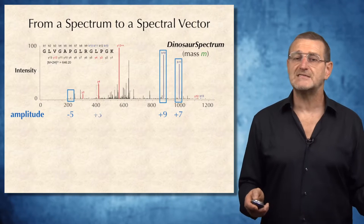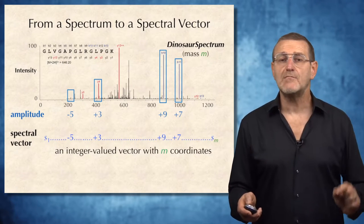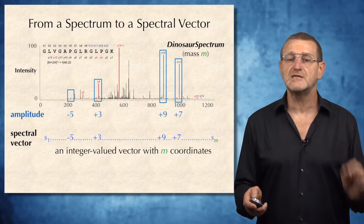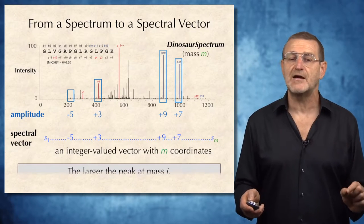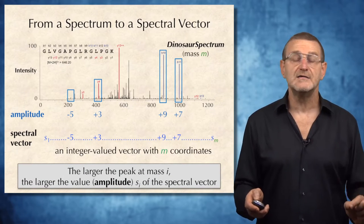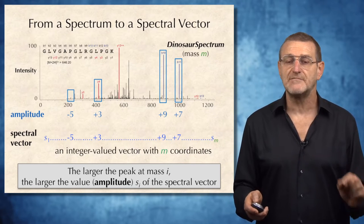An amplitude may be negative or positive. For this peak, it is +7. And for this peak, it is +3. We will combine them all in a single spectral vector, which is an integer-valued vector with m coordinates. And typically, the larger the peak at mass i, the larger the value of amplitude of the spectral vector. But the dependencies between intensities and amplitudes are complex.